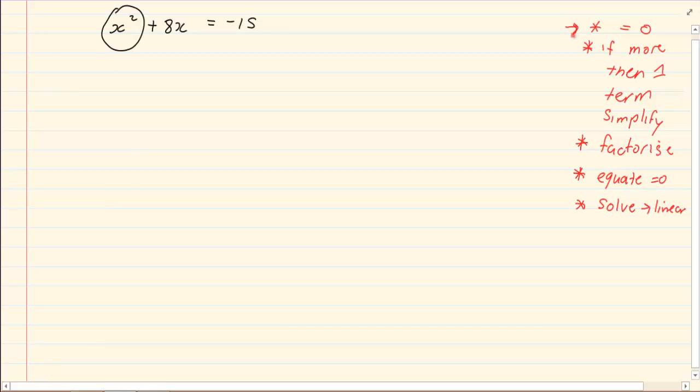The first instruction says we must make it equal to 0. So we've got x squared plus 8x plus 15 is equal to 0. Next, it is already simplified for us. There is no brackets in between.